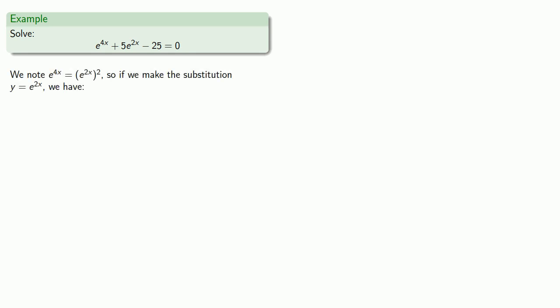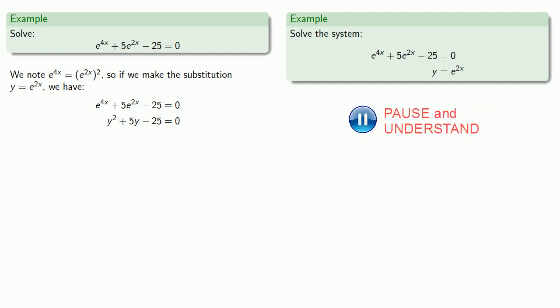e to power 4x is e to power 2x squared. So if we make the substitution, y equals e to power 2x, then we have... And when we do that, solving this single equation is the same as solving the system of equations which we've already solved.